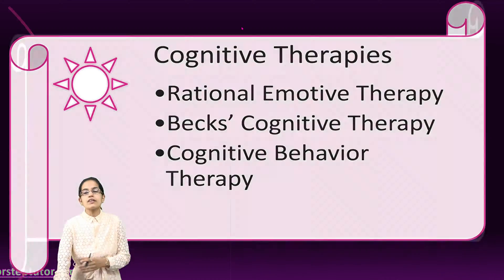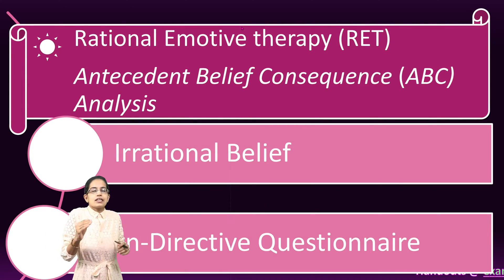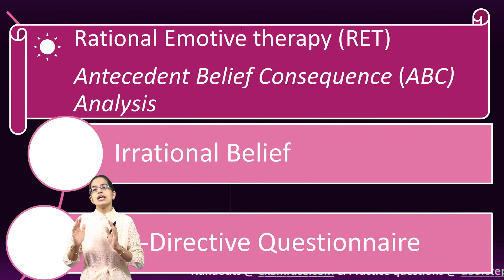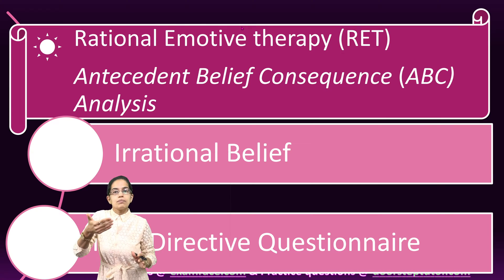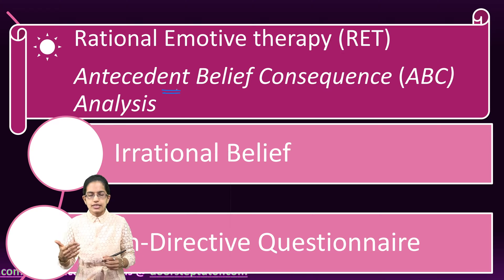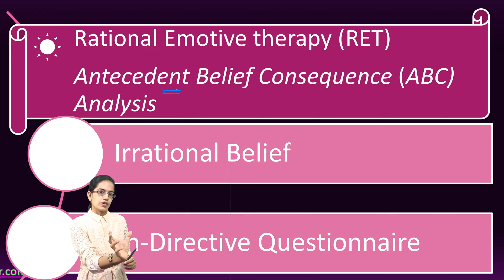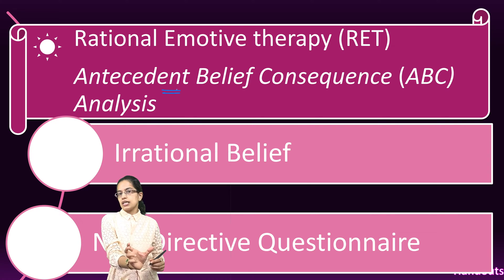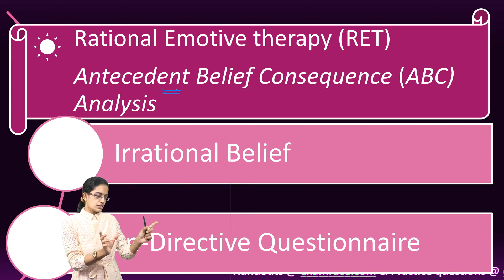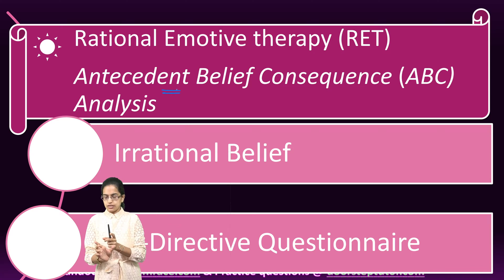To begin with the very first therapy, the Rational Emotive Therapy, this therapy believes in a simple ABC principle. A means antecedent, B means belief, and C means consequence. The antecedent is something that precedes the irrational behavior, the belief is the irrational belief, and the consequence is something that results from the irrational belief.